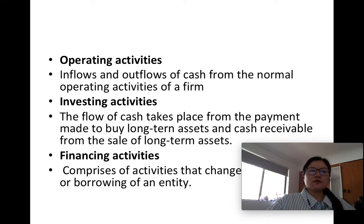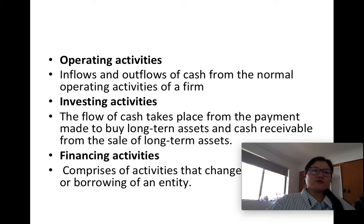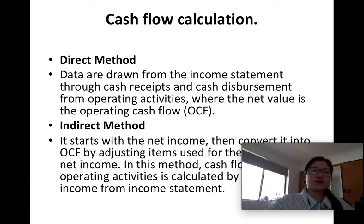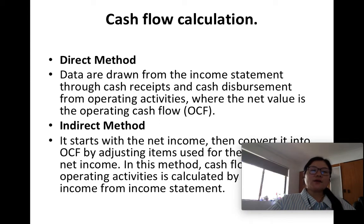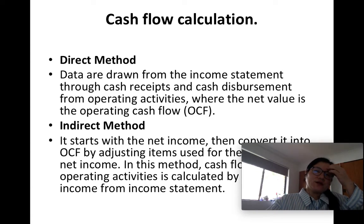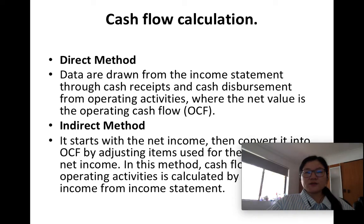Operating activities include inflows and outflows of cash from normal operating activities. In investing activities, the flow of cash takes place from payments made to buy long-term assets and cash received from the sale of long-term assets. Financing activities comprise activities that change the equity or borrowings of an entity. Cash flows are calculated by two methods: direct method and indirect method. In the direct method, data are drawn from the income statement through cash receipts and cash disbursements from operating activities, where the net value is the operating cash flow. In the indirect method, it starts with net income and converts it into operating cash flow by adjusting items used in the calculation of net income, taking net income from the income statement.